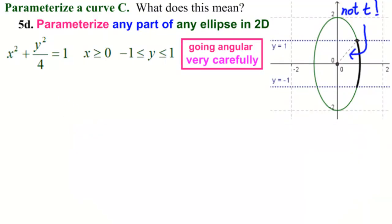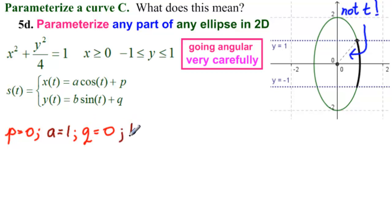So we remember our formula is this. We look at here what we have. We have p equal to 0, a equal to 1, q equal to 0, and b equal to 2.